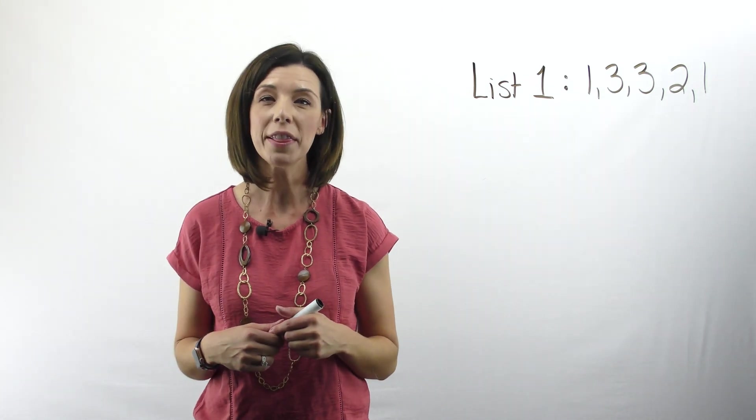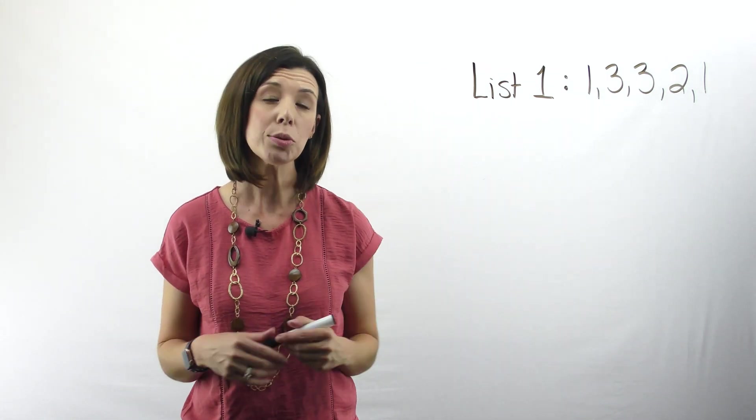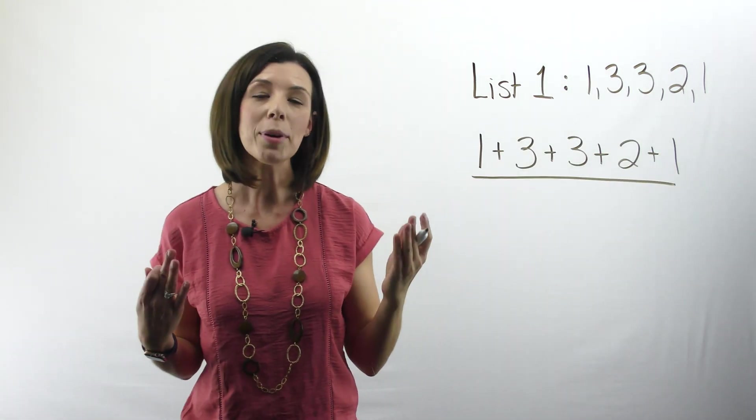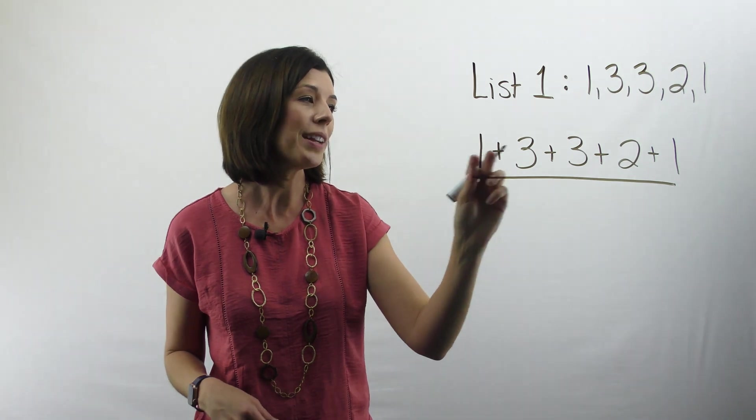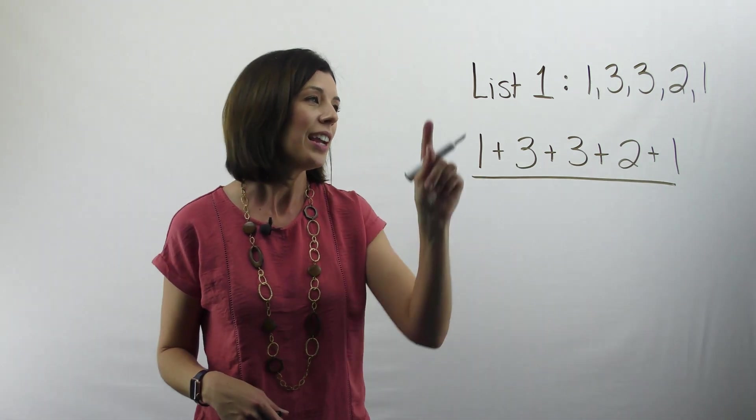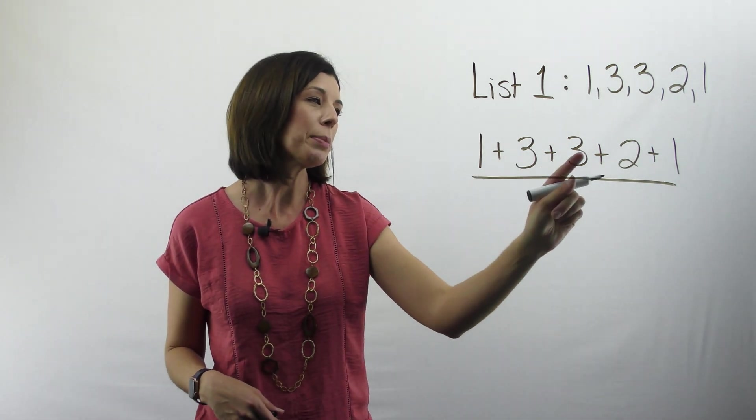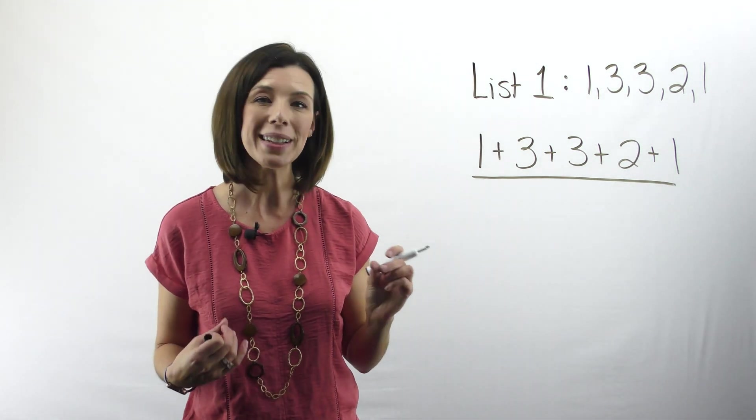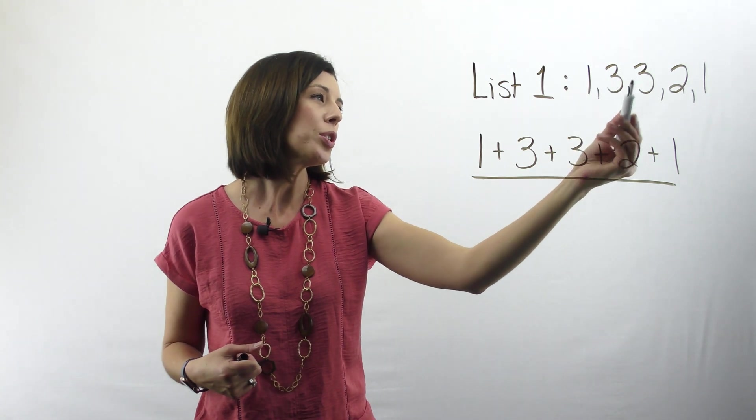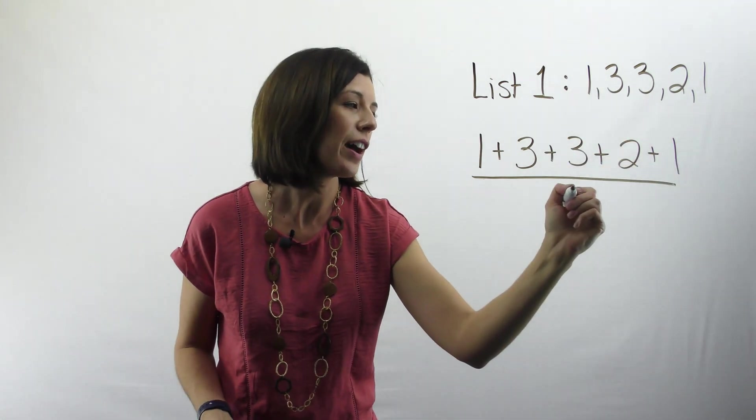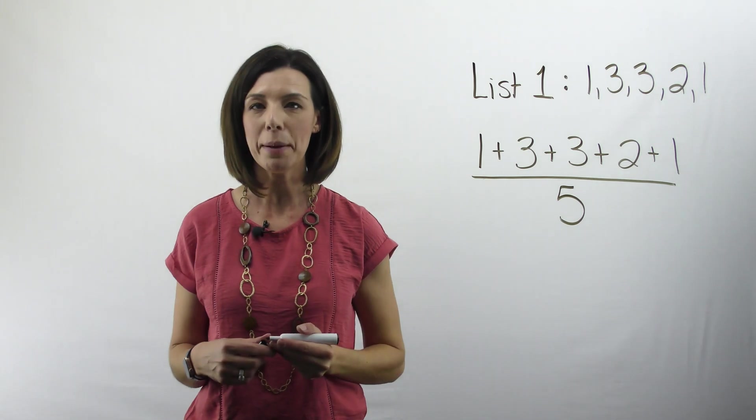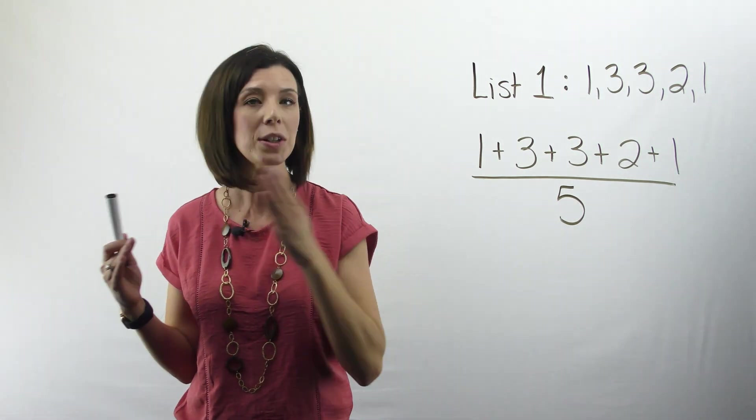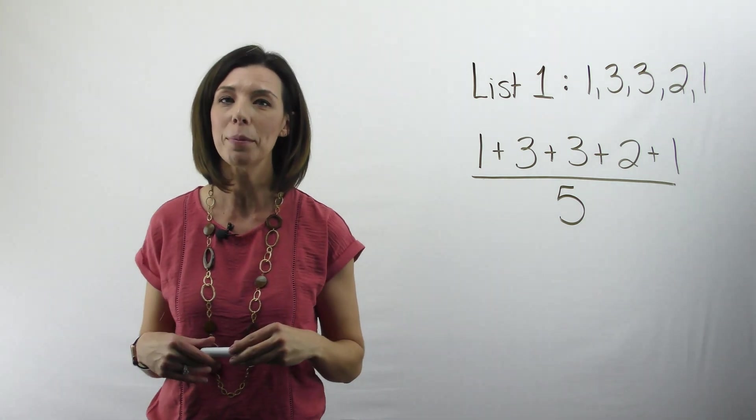The next column is going to ask you to find the mean mathematically. Here's what I expect your work to look like for that one. Remember, to find the mean mathematically, I'm going to add all of my data points together. In list one, that's one plus three plus three plus two plus one. Then I need to divide it by the number of data points that I have. One, two, three, four, five. So I see that I have five points. I am going to divide by five. Again, your answer here should be the exact same thing that you found when you leveled the blocks with your virtual manipulatives.